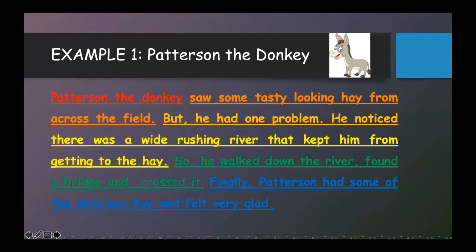Now, let's put all the elements together and write the summary. It should look something like this. Patterson the donkey saw some tasty looking hay from across the field, but he had one problem — he noticed there was a wide rushing river that kept him from getting to the hay. So, he walked down the river, found a bridge, and crossed it. Finally, Patterson had some of the delicious hay and felt very glad.